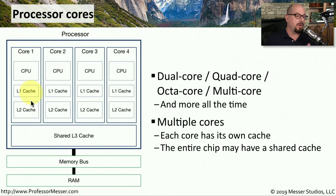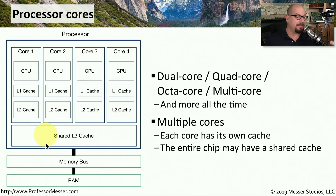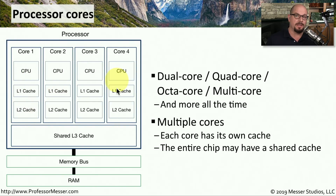In my diagram, I'm also showing a level one and a level two CPU cache that is independent to each individual core. This particular processor also has a level three cache that is a shared cache for all four cores on this processor.